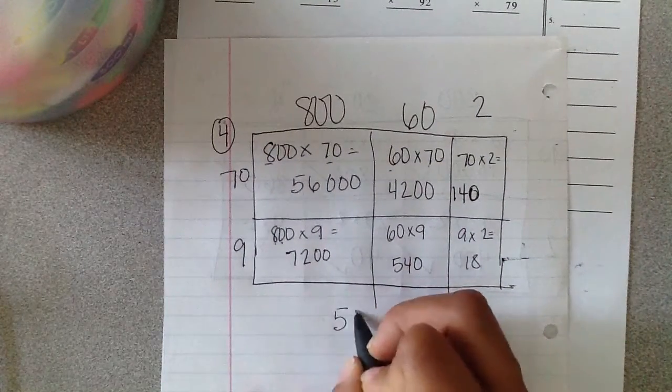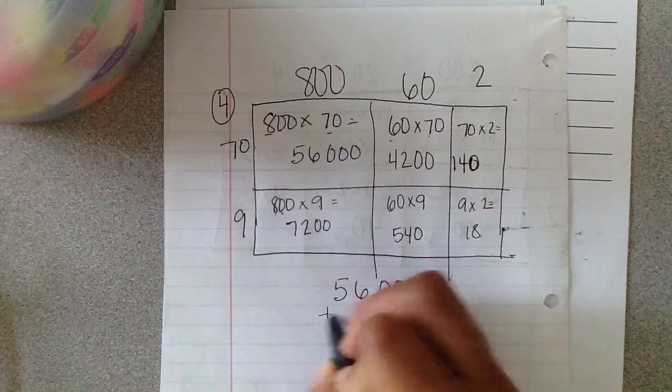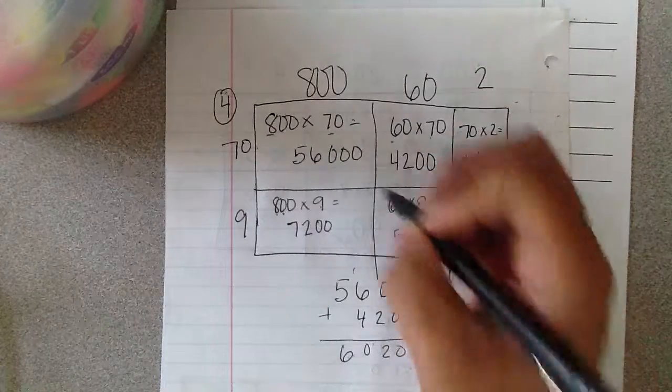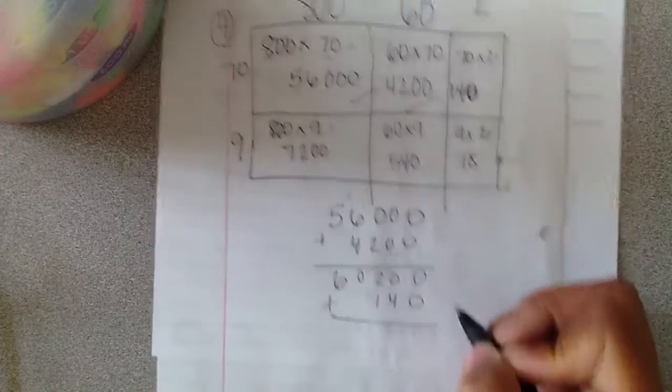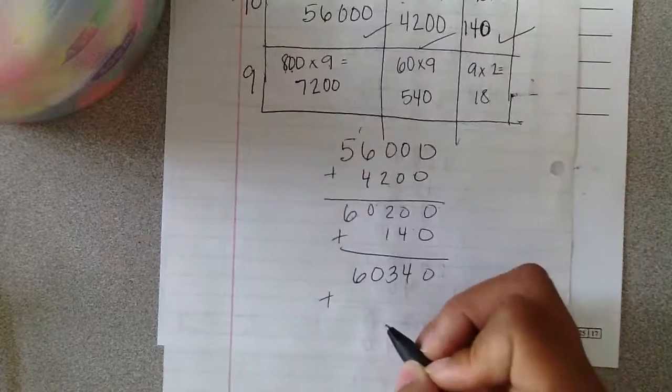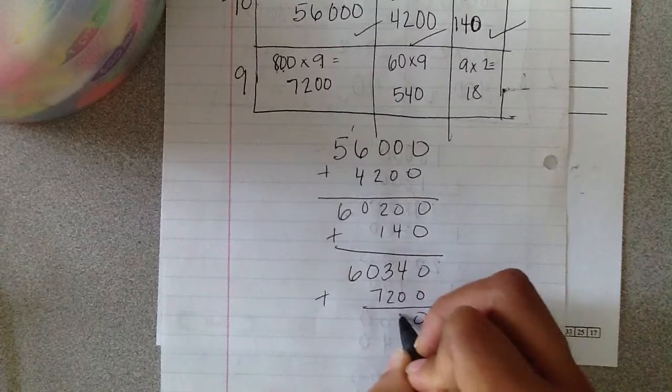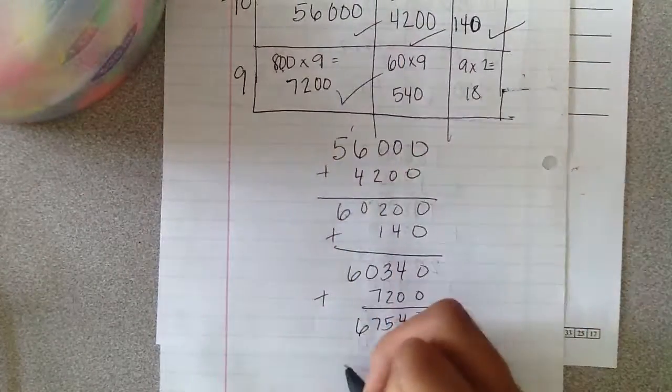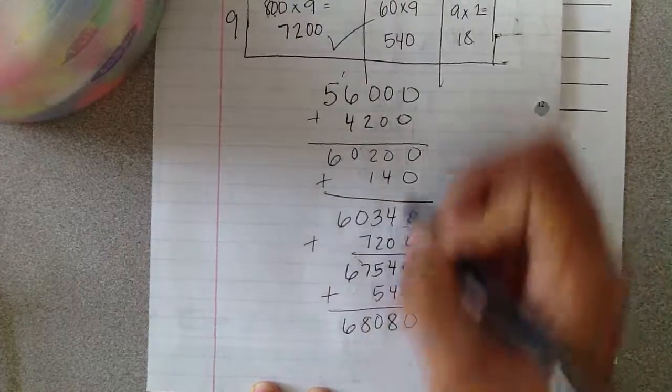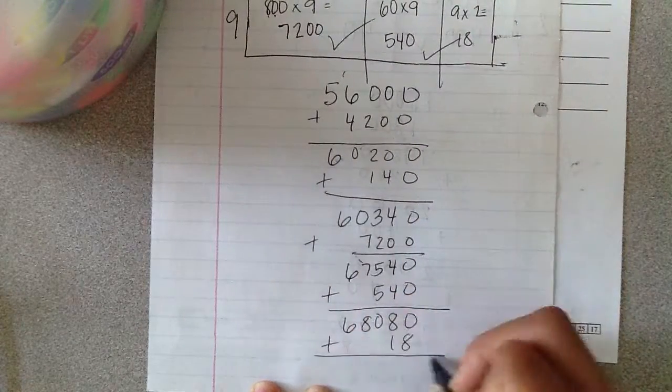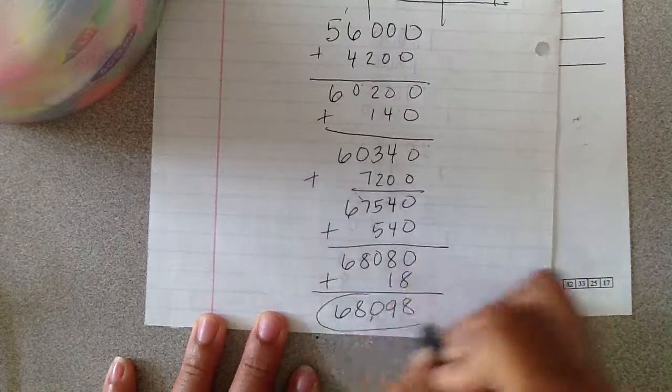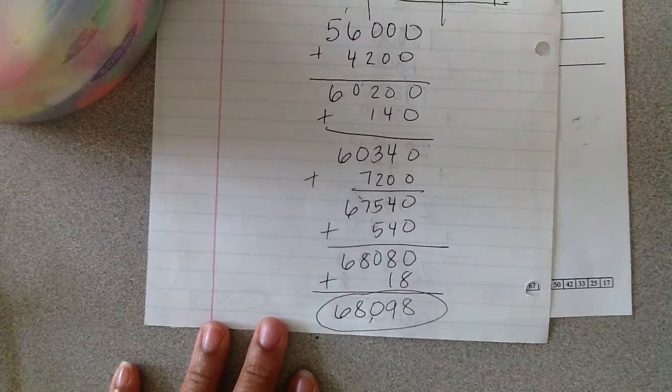So I have to add all my partial products up. Fifty-six thousand plus four thousand two hundred equals sixty thousand two hundred. Plus one hundred forty. Plus seven thousand two hundred. Plus five hundred forty. Plus eighteen. So you should have gotten sixty-eight thousand ninety-eight as the answer to number four. And that concludes our first video.